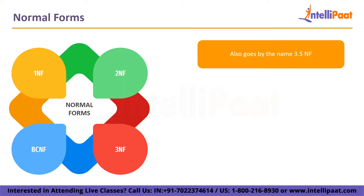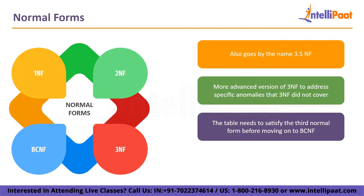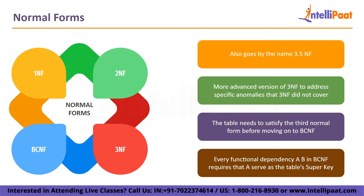The final normal form is BCNF, also known as Boyce-Codd Normal Form or 3.5NF. It was created by Raymond F. Boyce and Edgar F. Codd as a more advanced version of 3NF to address specific anomalies that 3NF did not cover. The table must satisfy 3NF before moving to BCNF, and every functional dependency A→B in BCNF requires that A serve as a superkey of the table.